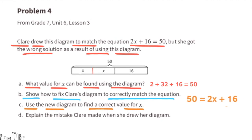Part c: Use the new diagram to find a correct value for x. For the new diagram, the equation is 50 = 2x + 16. We can subtract 16 from both sides: 2x + 16 - 16 = 2x, and 50 - 16 = 34. Now we know that 2x = 34. Let's divide both sides by 2: 2x divided by 2 equals x, and 34 divided by 2 equals 17. We know that x equals 17.